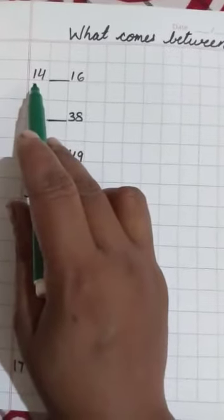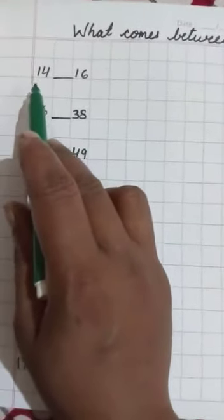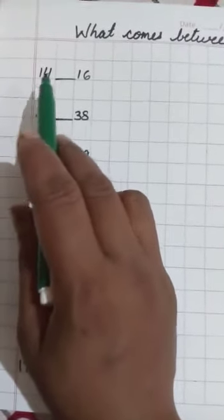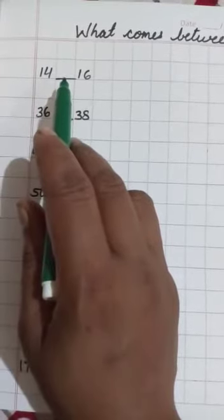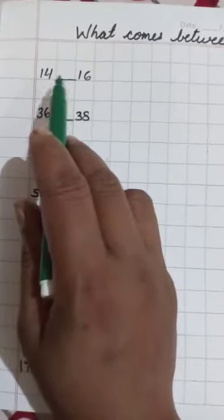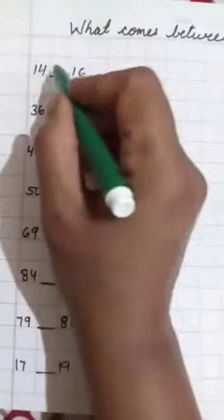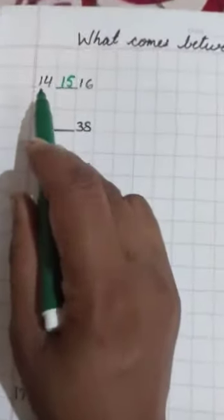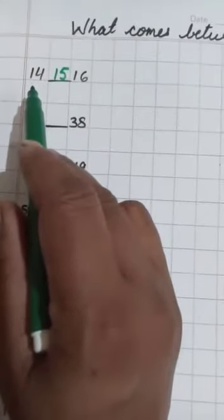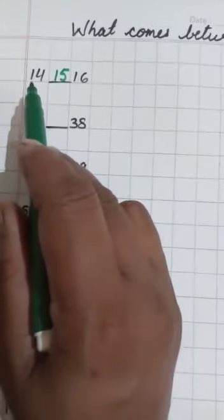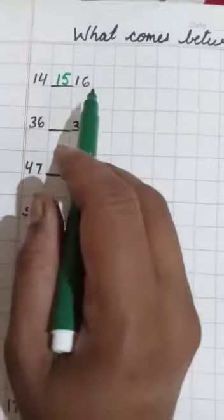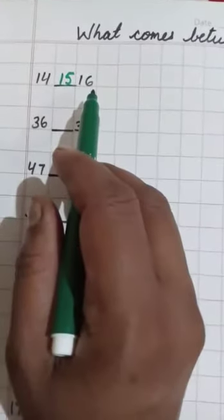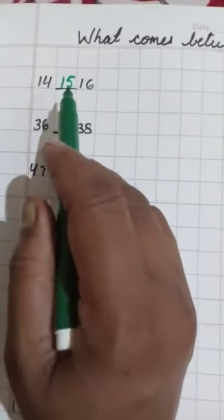So, here the first number is 14. 1, 4, 14. So, after 14, which number is come? After 14, 15. So, children, see here, which number is come between 14 and 16. This is 15. Okay.